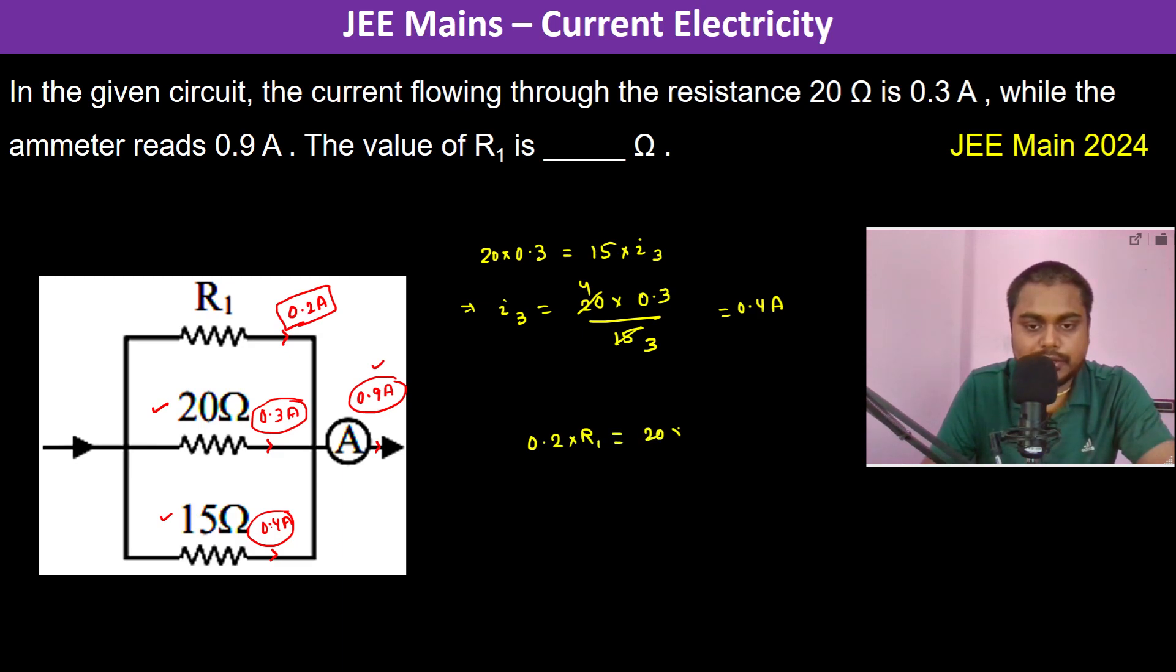Therefore, 0.2 × R₁ should equal 20 × 0.3. This simplifies to 6, so R₁ becomes 30 ohms. Therefore, the value of R₁ is 30 ohms.